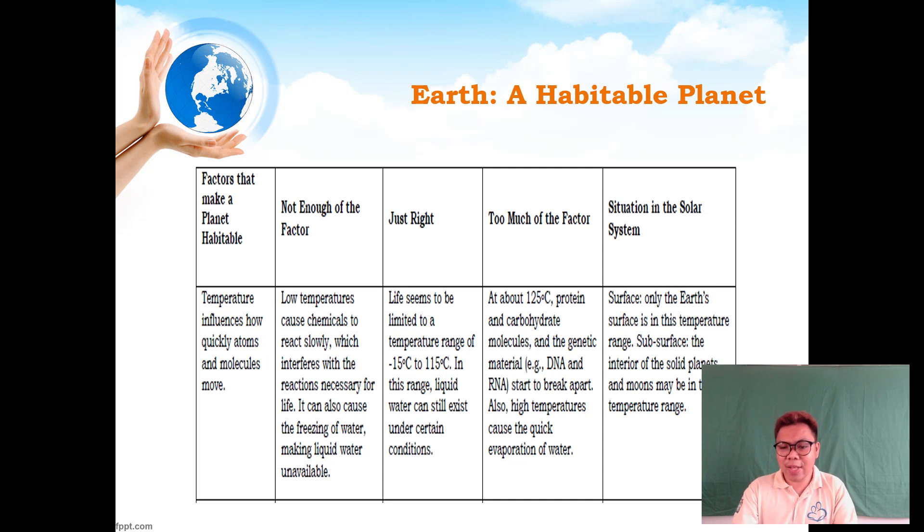At about 125 degrees Celsius, proteins, carbohydrates, and genetic materials such as DNA and RNA start to break apart. Our body can be affected because of too much temperature. Also, high temperatures cause quick evaporation of water, which is the basic material we need. Surface: only Earth's planet surface is in this temperature range.